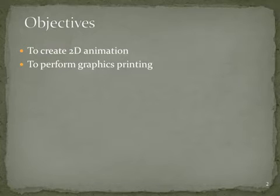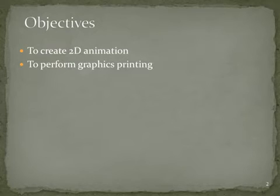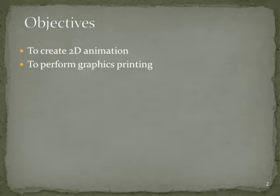Each rendered frame at a specific time is essentially a regular still image, however the content of the frame may change over time. A higher frame rate represents smoother animation, but the frame rate of an animation is limited by the capability of the rendering system.